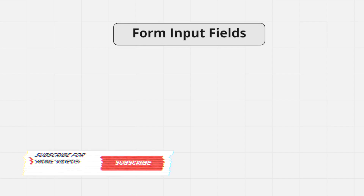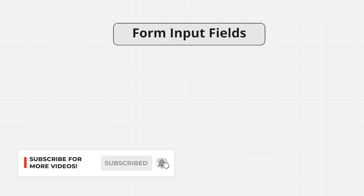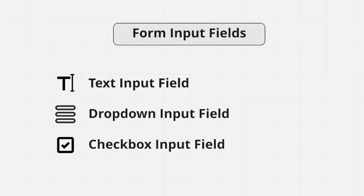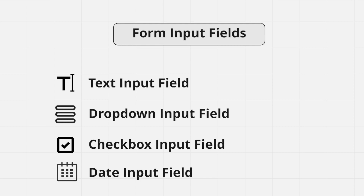Hey, how's it going guys? Welcome back. So in this video, we're going to continue on with our Selenide series and we're going to learn how to work with different form input fields. We're going to be looking into text input fields, dropdown input fields, checkbox input fields, and date input fields. These are all common input fields on a typical web page, and with Selenide you're going to see how easy it is to work with all of them.